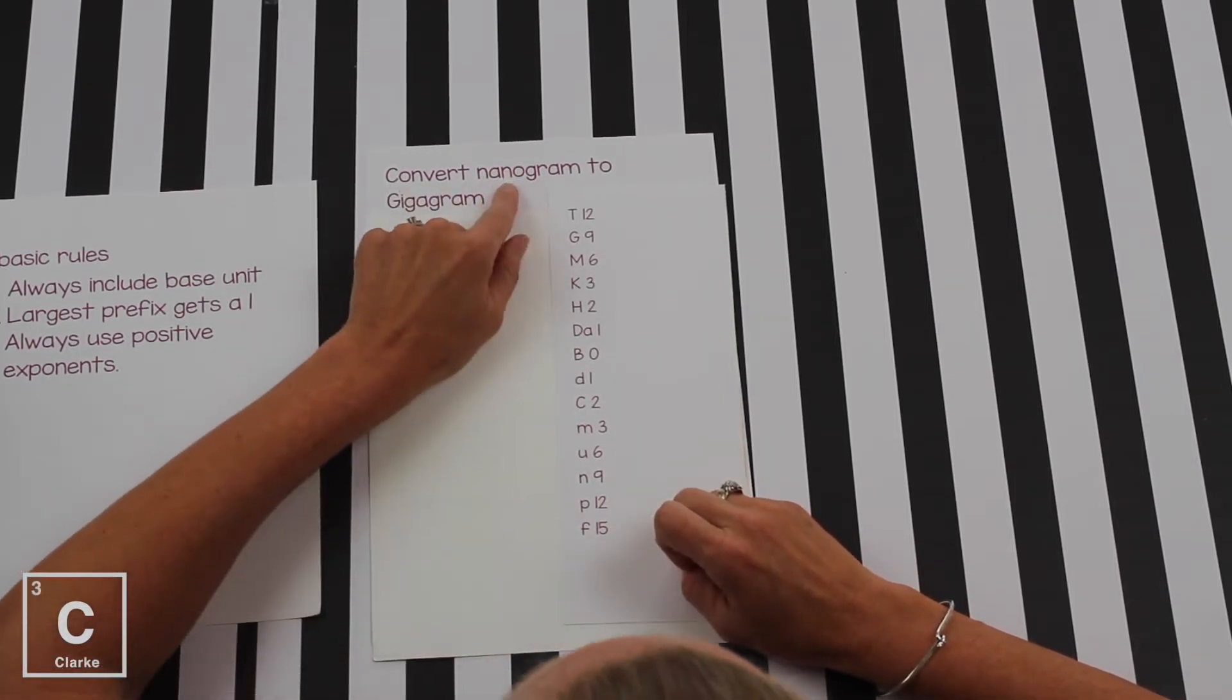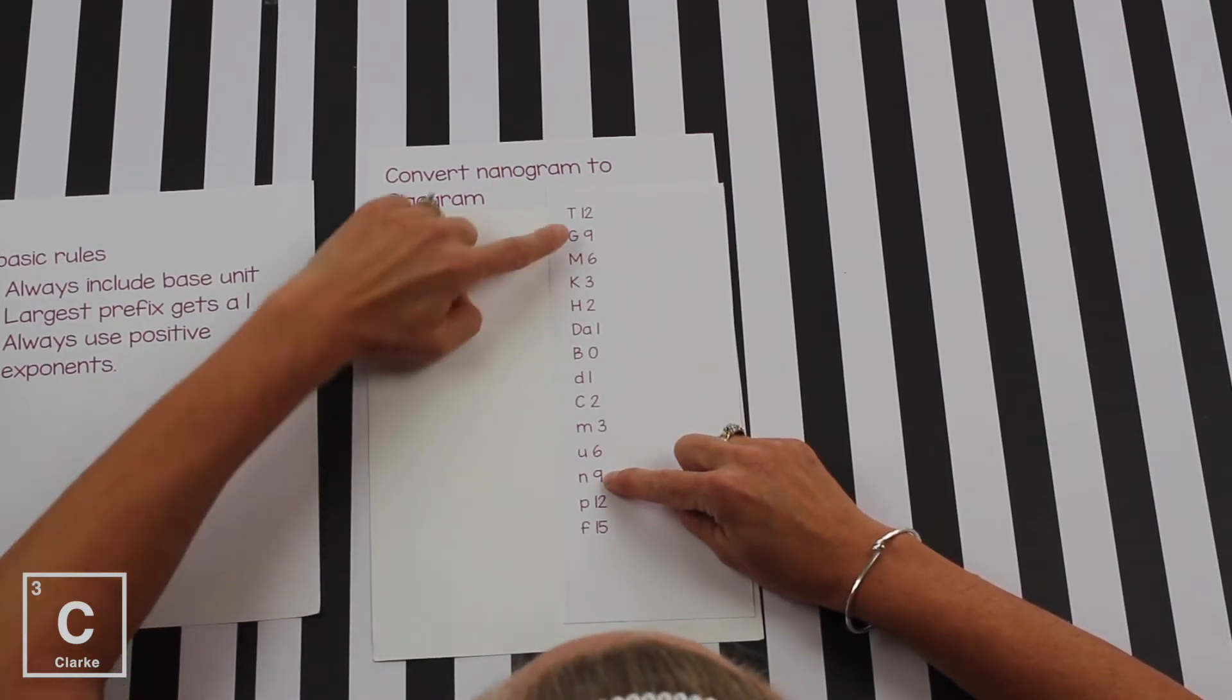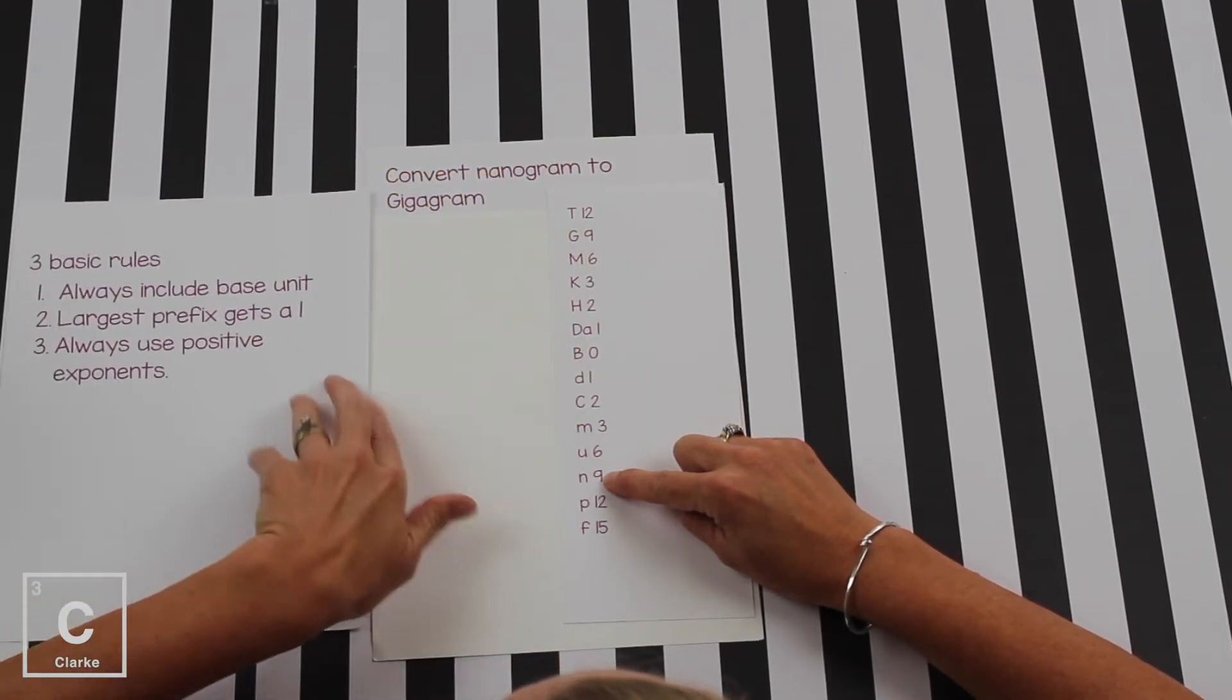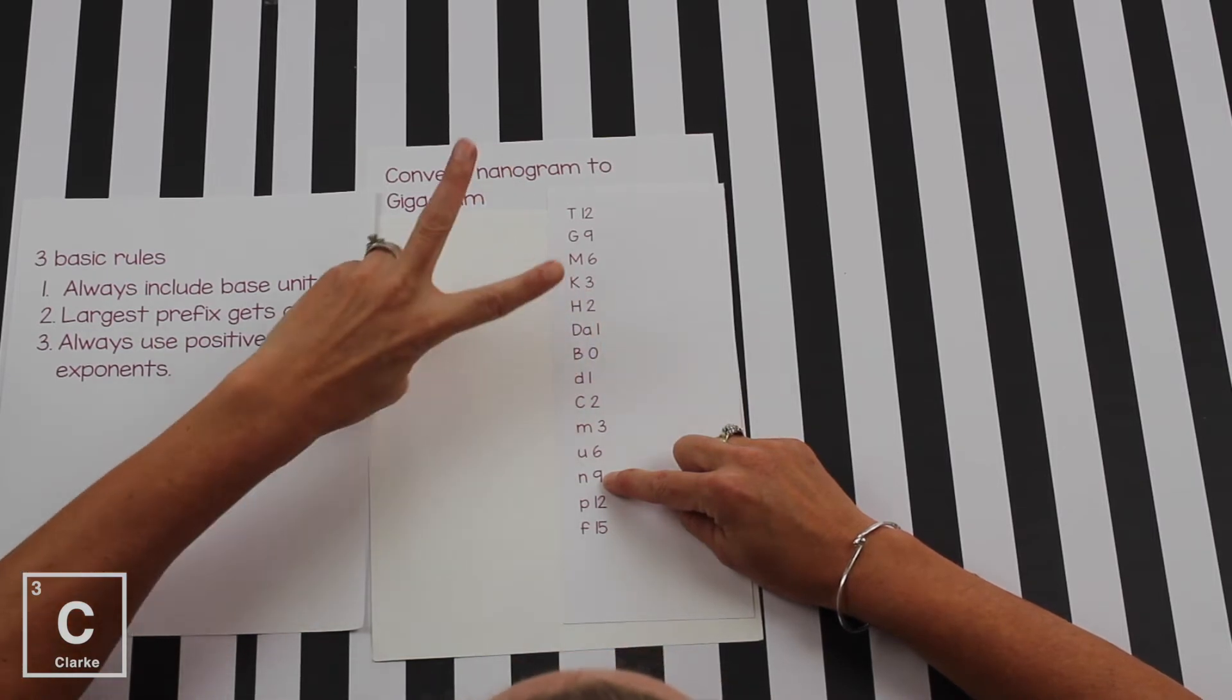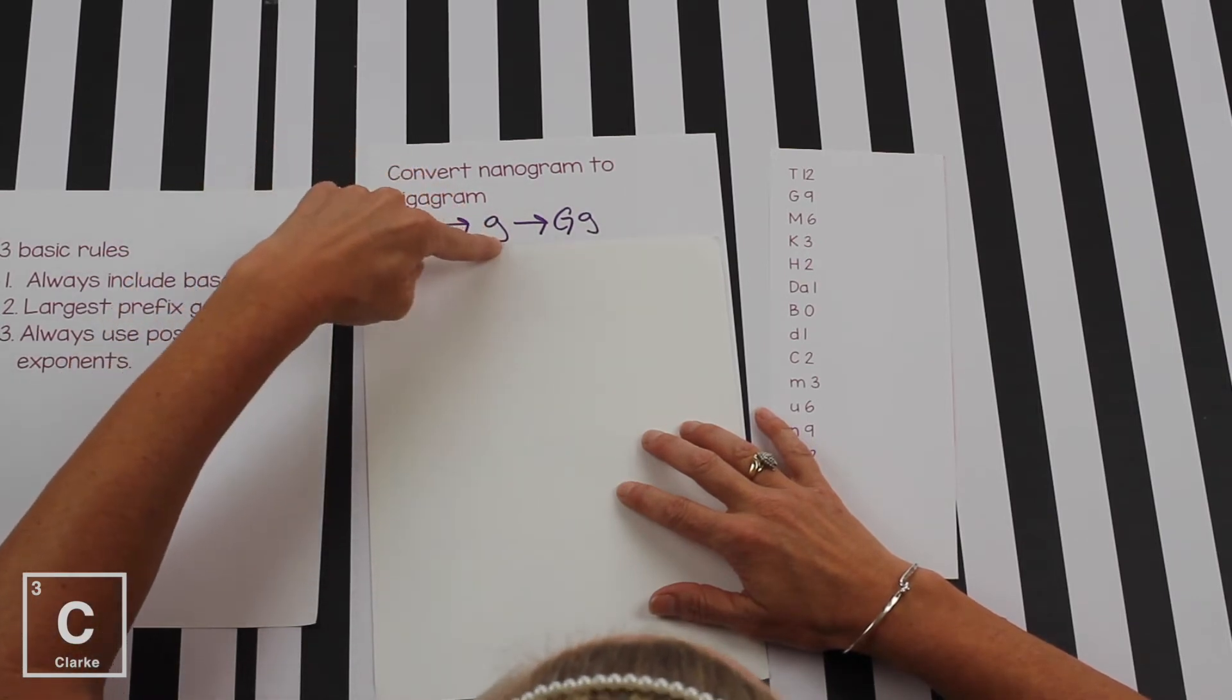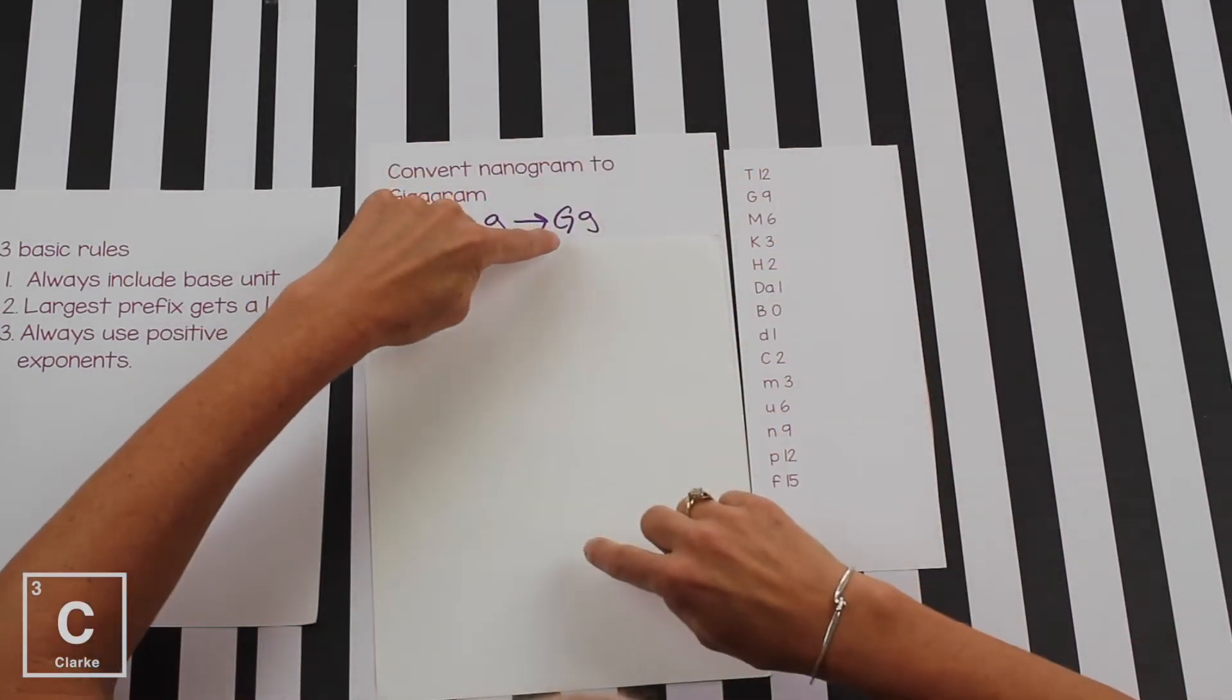So, let's make a plan. Convert nanogram. That means we're starting with nanogram. That's here. And then we've got to go all the way to giga. That's way up here. Now, you go through the base unit. And if you remember because of my rules, it says always include the base unit. So, we're going to have to have two conversion factors. Again, here's our plan. Nanograms to grams because we've got to include that base unit. So, we're going to go nano to base. Base to giga. And that's what we did right here.